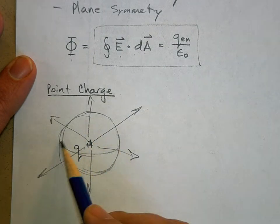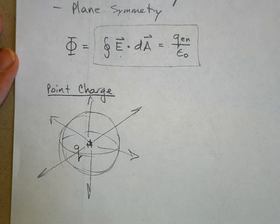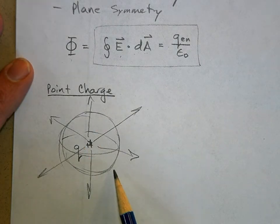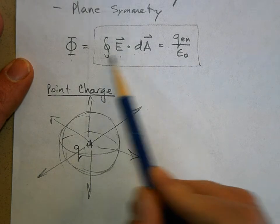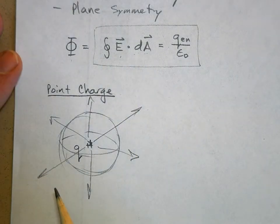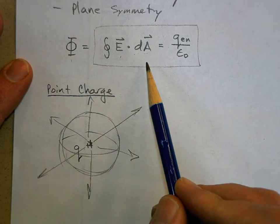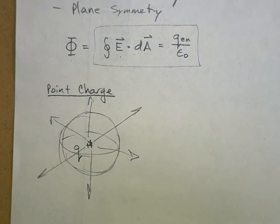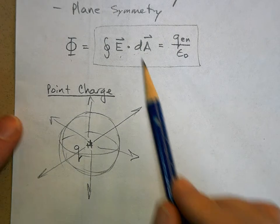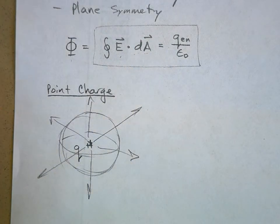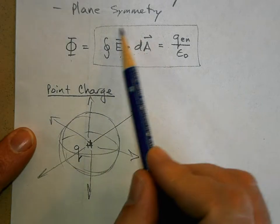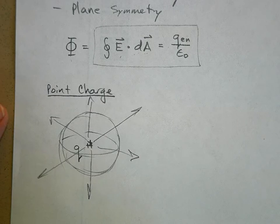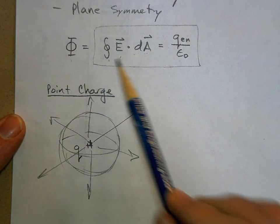Why do we surround it with a sphere? Because if we do, we never have to integrate the left side of Gauss's law. You want to choose a Gaussian surface where you never have to integrate the left side — the closed surface integral part. If you choose the right surface, the integral will go away.